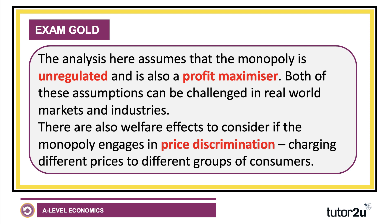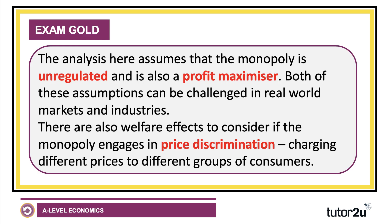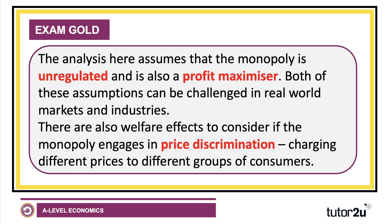This analysis assumes the monopoly is unregulated. Of course, some regulatory authority might impose price capping or price controls on the monopoly. We're also assuming the monopoly is a profit maximizer at output where marginal cost meets marginal revenue — if they weren't, there'd be a different price and output. Both of these assumptions can be challenged in real-world markets. There are also welfare effects to consider if we move away from a single price, as this analysis assumes the monopoly charges everybody price P1. In fact, monopolies may use price discrimination — charging different prices to different groups of consumers for the same product — and that will have some economic welfare effects. Take a look at our videos on price discrimination to work through that analysis.